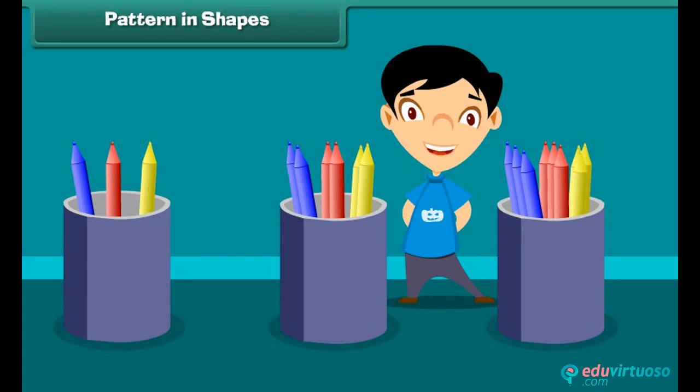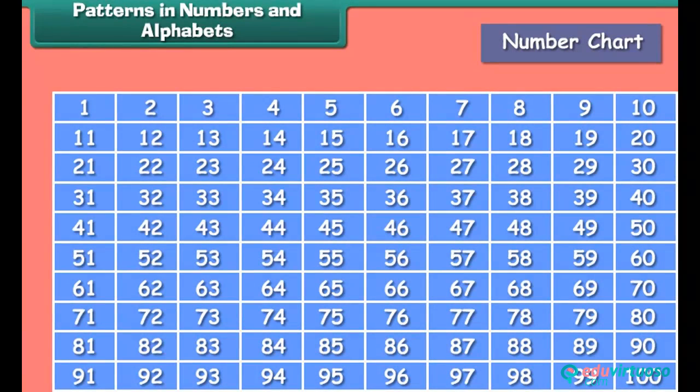Let us look at a different type of pattern. If you notice, the numbers of crayons are not exactly repeating. Each color of crayon is increasing. This type of pattern is called a growing pattern.